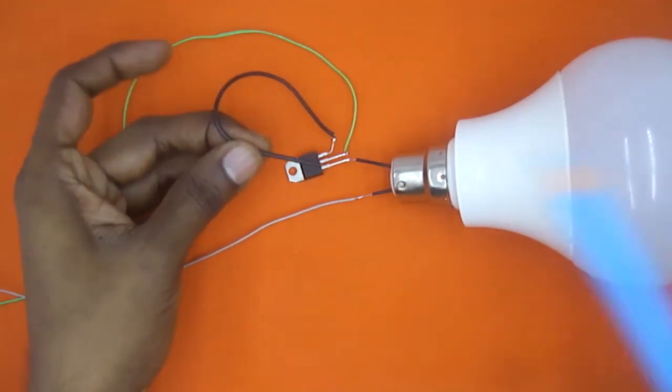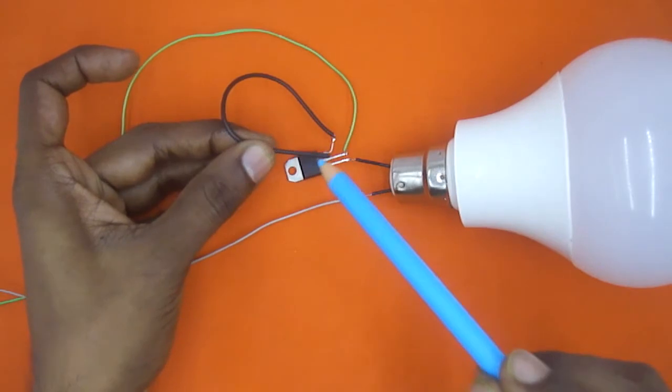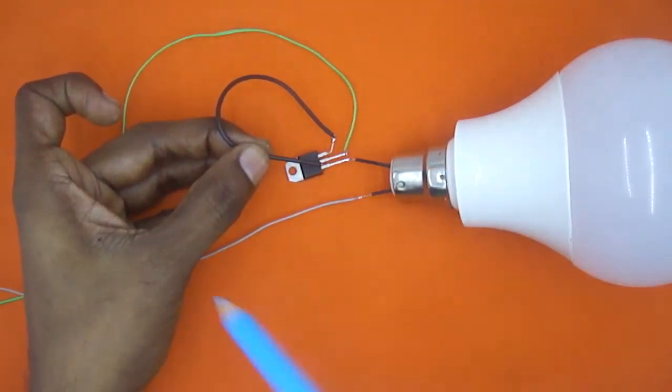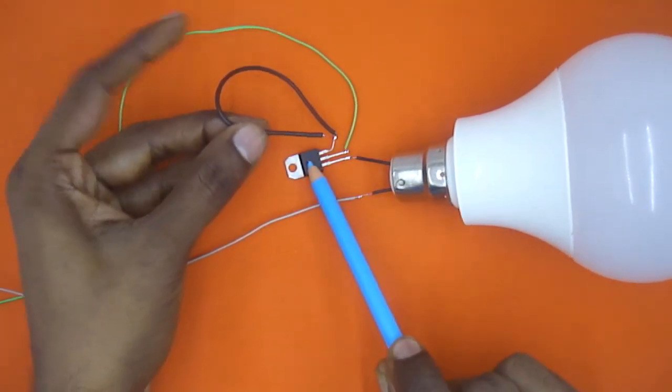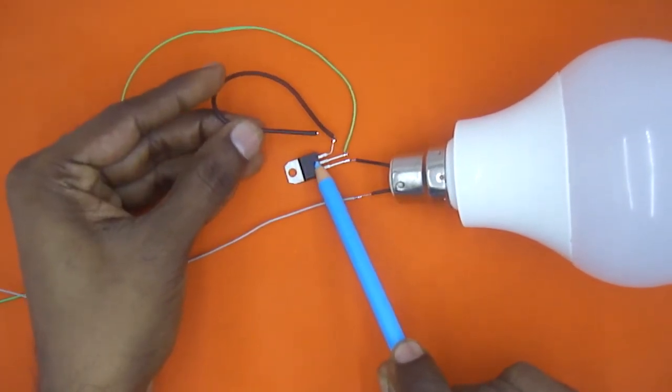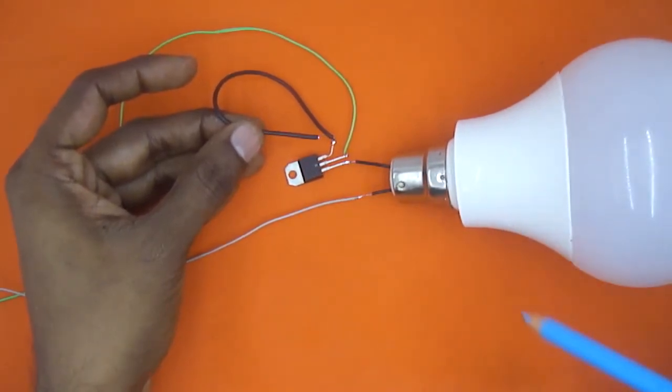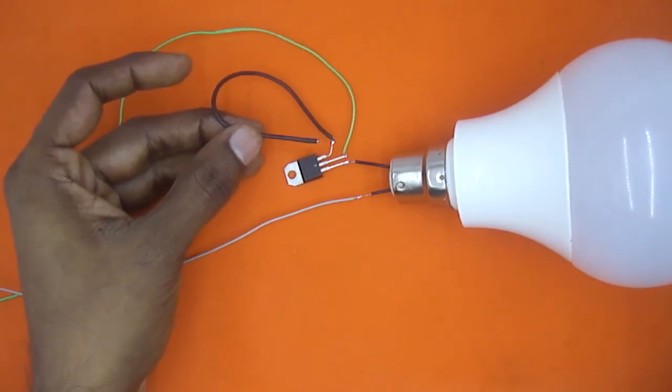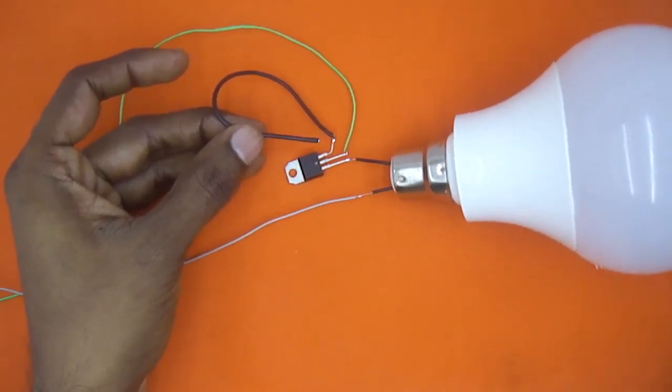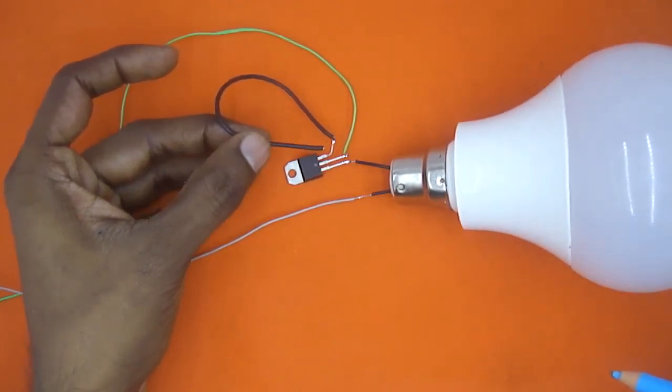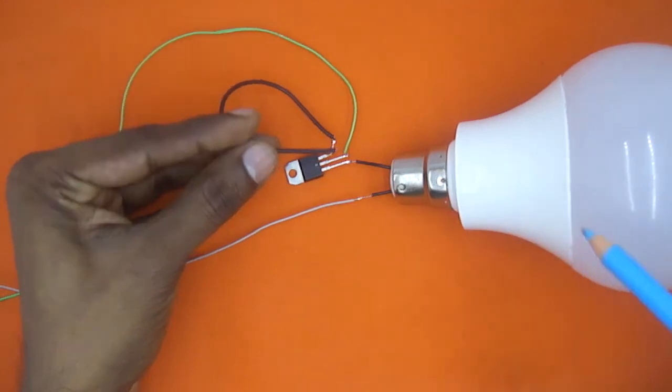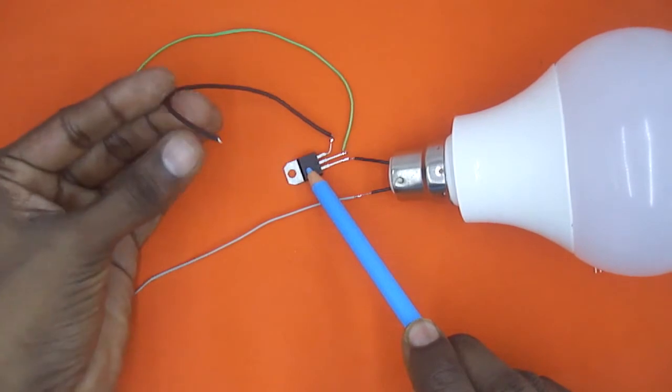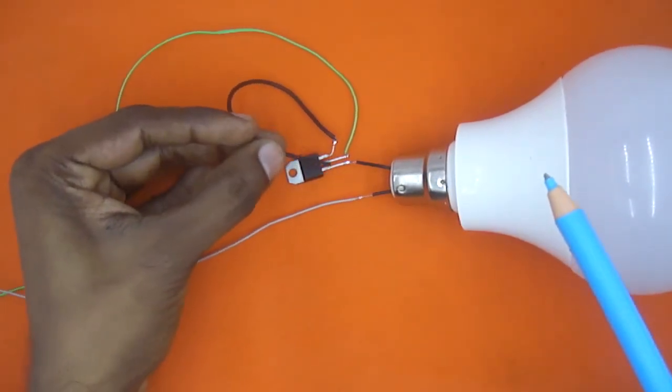The thing is the current flowing through this wire is only few milliampere. But the current flowing through this green wire, this black wire, and bulb could be high. As I am using a TRIAC which can handle a current up to 12 ampere, we can handle some heavy load like iron, induction cooktop, or maybe heater or some high power devices to control. And the current inside this wire will always be in few milliampere.